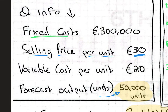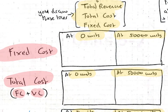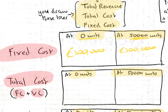The next line we draw is our fixed costs. Fixed costs are given to us in the question. An example of fixed costs is rent. The definition: a cost that remains the same regardless of output changes. So fixed costs are €300,000 no matter what output you produce. At zero units we are at €300,000, and even if output goes up to 50,000 units we are still at €300,000.